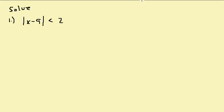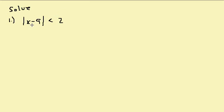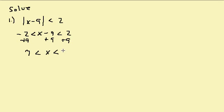Let's look at solving this inequality: absolute value of x minus 9 is less than 2. We're going to use the third rule — absolute value of x less than k gives negative k less than what's inside the absolute value less than k. So we have negative 2 less than x minus 9 less than 2, and then we solve by adding 9 to get 7 is less than x less than 11.